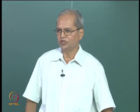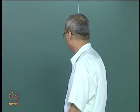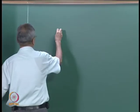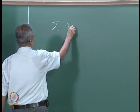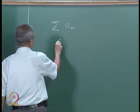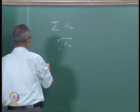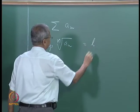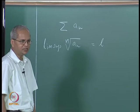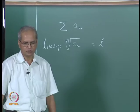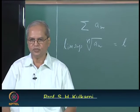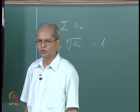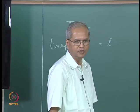We were discussing series of non-negative terms in the last class, and towards that we saw the root test. Suppose sigma aₙ is the series; we look at the nth root of aₙ and the limit superior of this. If this limit superior is less than 1, the series converges. If it is bigger than 1, the series diverges. If it equals 1, the test gives no information. We have also seen examples of both types.